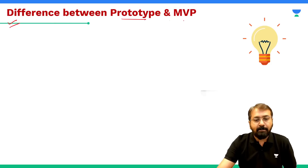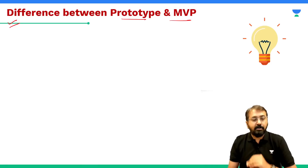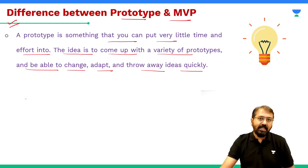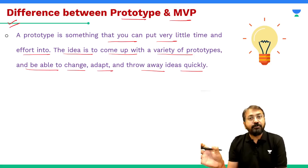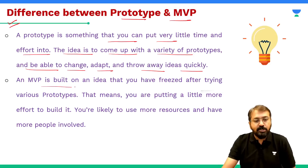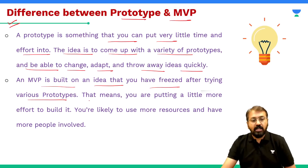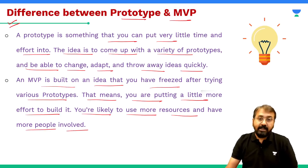What is the difference between prototype and MVP? A prototype is something you can put very little time and effort into — the idea is to come up with a variety of prototypes and be able to change, adapt, and throw away ideas quickly. You may create multiple prototypes when trying to give physical form to your idea. An MVP, on the other hand, is built on an idea that you have finalized after trying various prototypes. With MVP you are putting more effort, using more resources, and have more people involved.